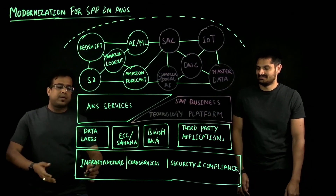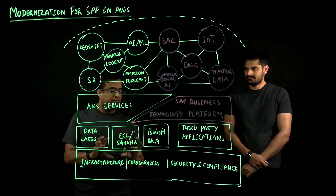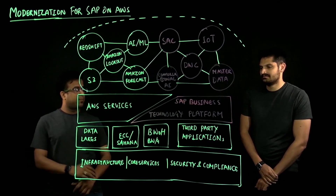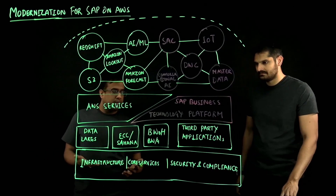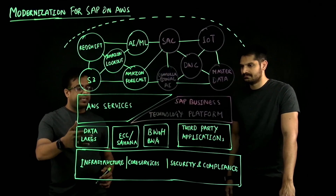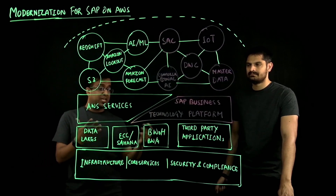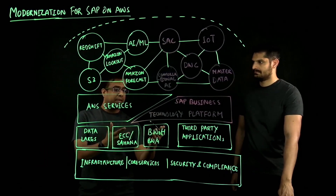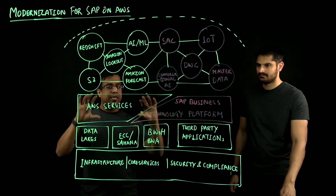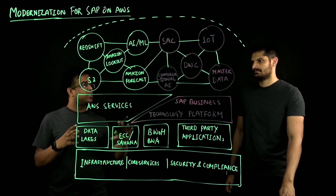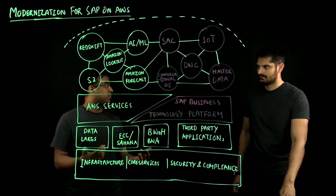Starting from the ground up, SAP on AWS customers can leverage our core infrastructure, global infrastructure, and core services around security and compliance to run SAP on AWS. There are different applications running on SAP on AWS, like Data Lake, ECC on HANA, S4 HANA, Rise with SAP — which have ECC and S4 both flavors — BW and HANA, BW4 HANA, and third-party applications. All these applications can leverage AWS cloud native services and SAP Business Technology Platform to modernize their applications and business processes.